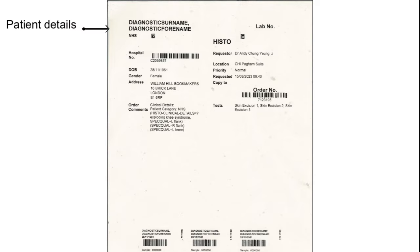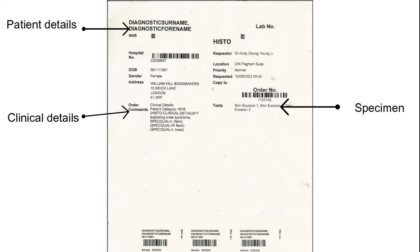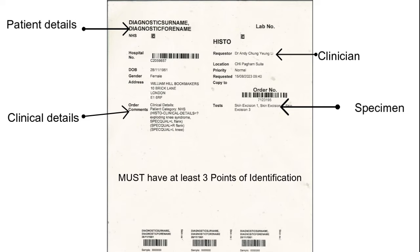Histology tests are requested through the ICE system by the originating department. It is essential that requests include the correct patient details, specimen and clinical details, and the requesting clinician. Specimens must have a minimum of three matching points of identification on the specimen pot and request form to be accepted.